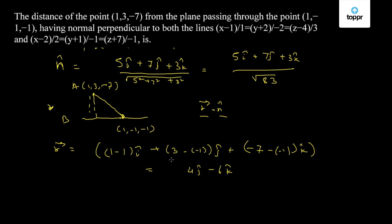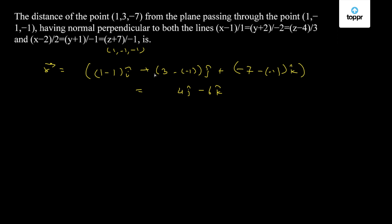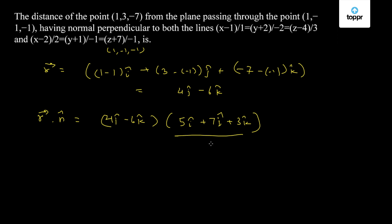So the distance is given by r-bar dot n-cap, which equals (0i-cap plus 4j-cap minus 6k-cap) dotted with (5i-cap plus 7j-cap plus 3k-cap) upon root 83. This equals 28 minus 18, which is 10 upon root 83 units. So the distance of point A to the plane P is 10 upon root 83 units. Thank you.